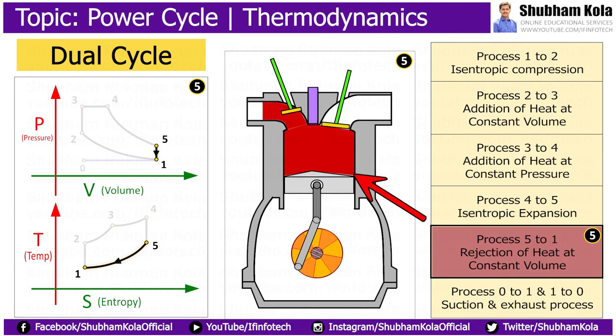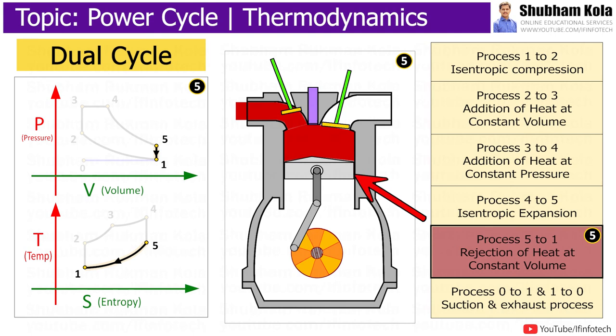The process 5 to 1 is rejection of heat at constant volume where heat is rejected from air while piston is at bottom dead center. The working gas pressure drops from 0.5 to 0.1. The exhaust valve opens at 0.5. As the piston moves from bottom dead center to top dead center with exhaust valve open, the gaseous mixture is vented to atmosphere and new cycle starts.